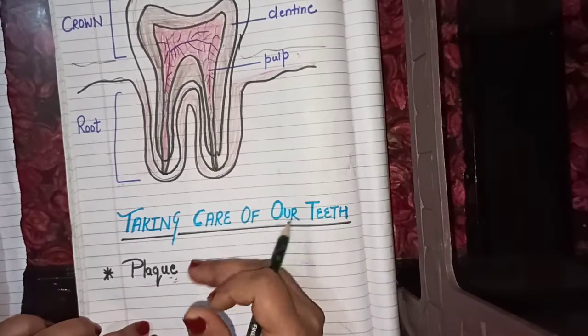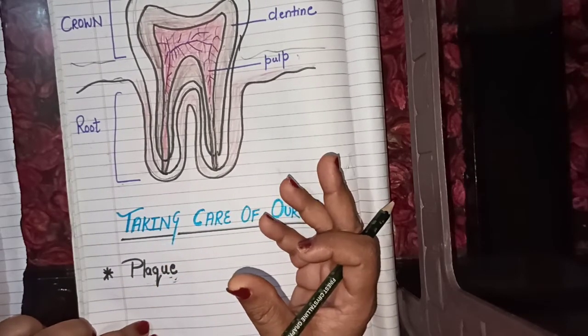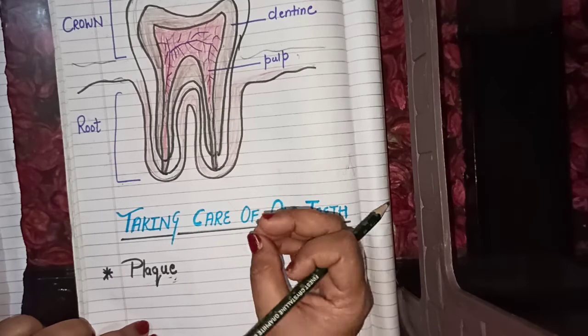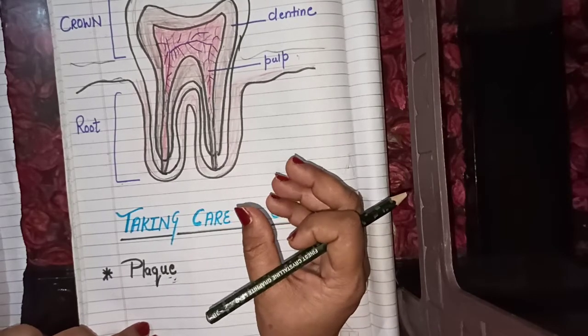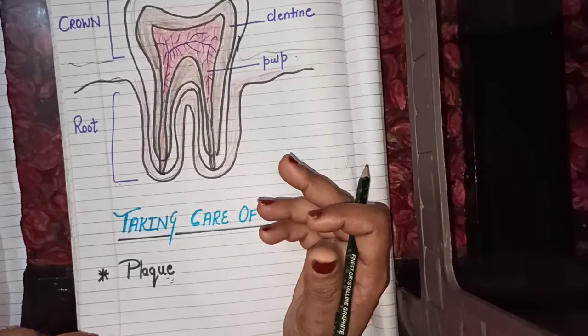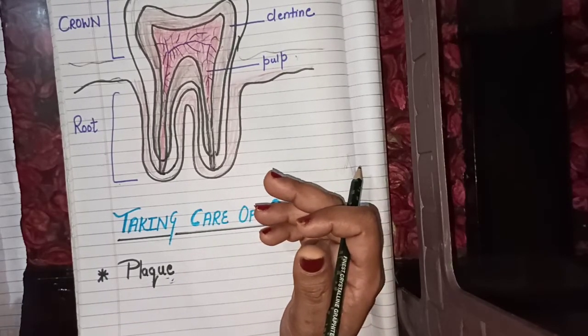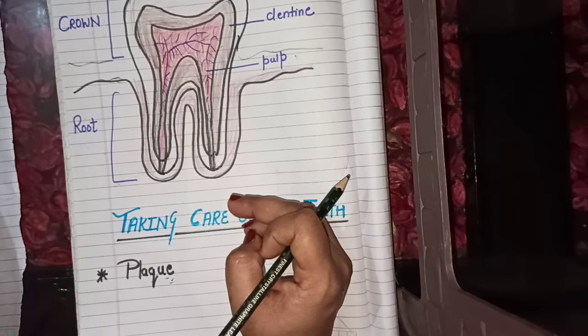Plaque also causes gum disease. It makes our gums swollen, red, and sore.